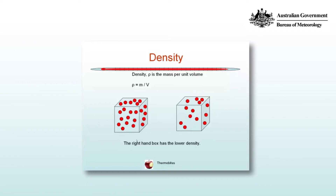Consider two volumes — two unit volumes of one by one by one metre, in other words, one metre cubed. Both boxes contain the same gas species, indicated by the red circles. But the box on the left has more of these red circles; that is, it has more of the gas and therefore it has a higher mass of the gas.